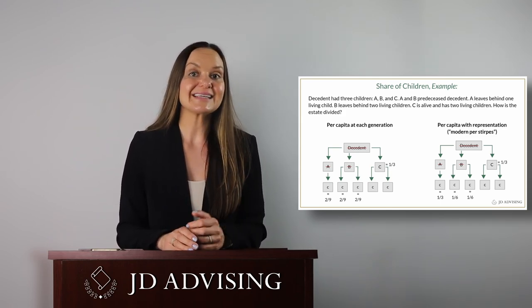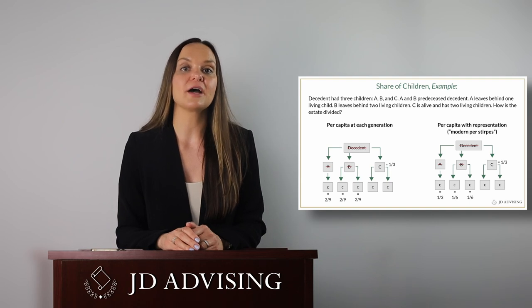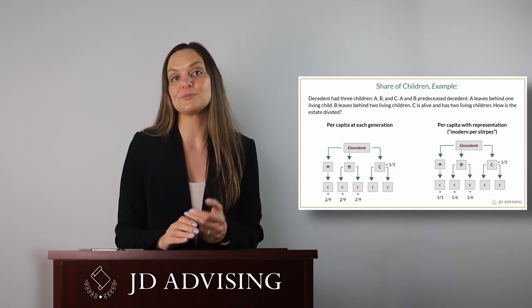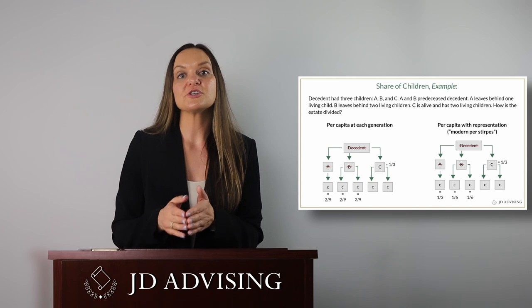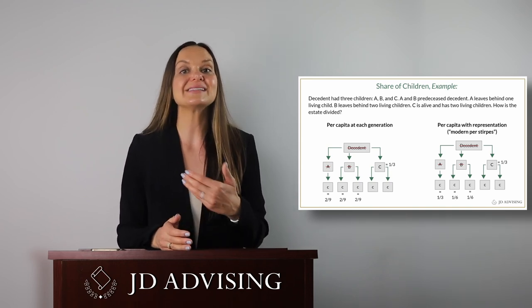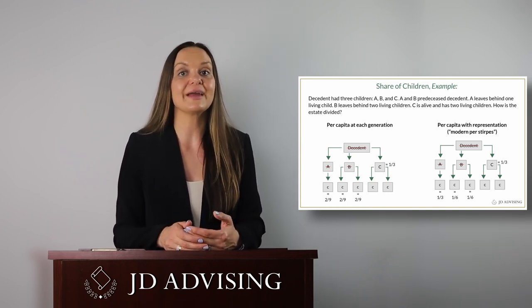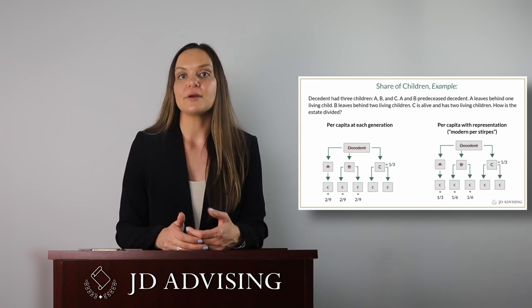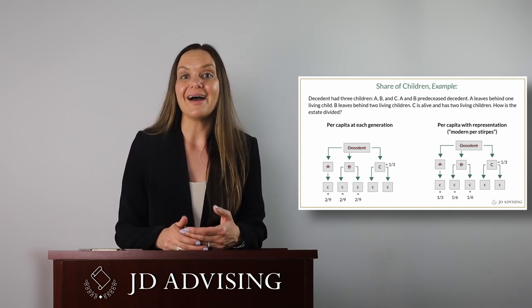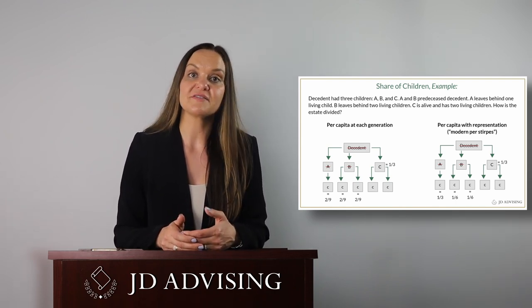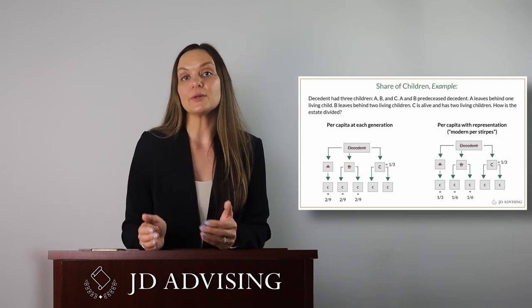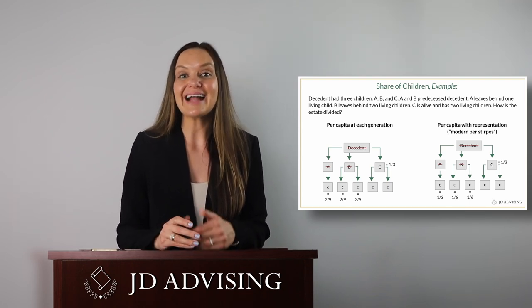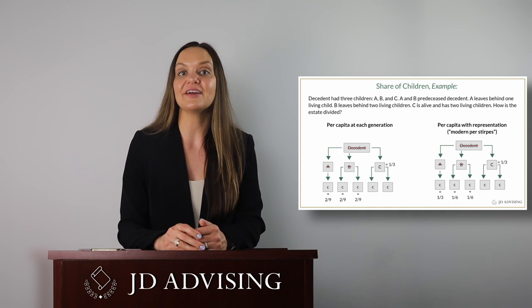The second scheme to be aware of is per capita with representation, or modern per stirpes. The key principle to remember here is that the heirs receive the representative share of their parents. This process starts out the same as above, but instead of combining the shares of the deceased to distribute them equally, the children of the deceased take the exact share that their parents would have inherited.